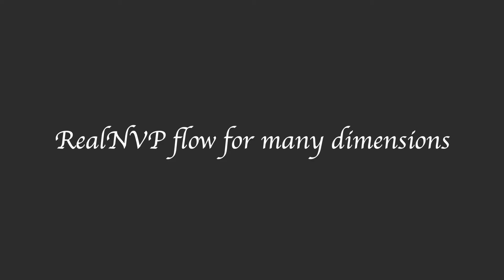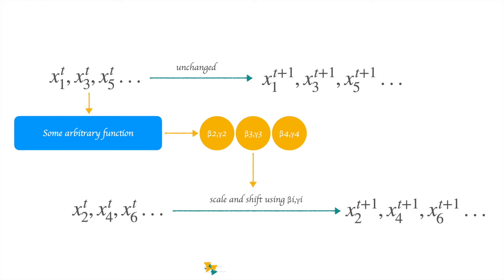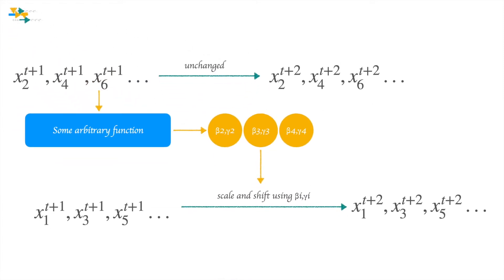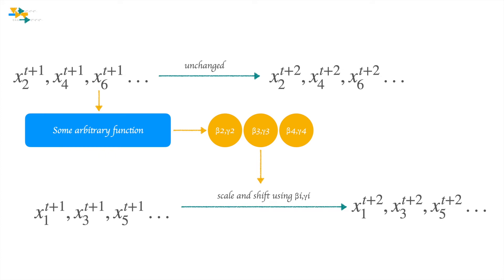Now let's take a look at how to implement Real NVP for many dimensions. Let's say we have a vector with n dimensions. We can use only the odd-indexed values to get the parameters for affine transformations of values at even indices. For example, x_1, x_3, x_5, and so on remain unchanged from time step t to t+1. These values are passed through an MLP to give us beta_2, gamma_2, beta_3, gamma_3, and so on, which are used by x_2, x_4, x_6, and so on to be scaled and shifted to give x_2 at t+1, x_4 at t+1, and so on. At the next time step, we keep x_2, x_4, x_6 — the even-indexed values — constant, and transform the values at odd indices in the same manner. This ensures that no value passes through the entire sequence of operations completely unchanged.